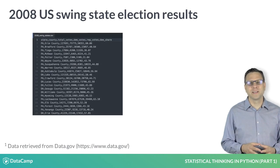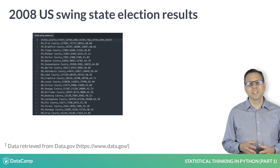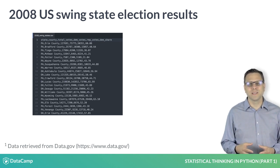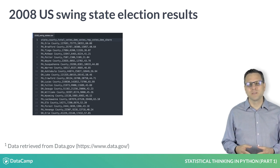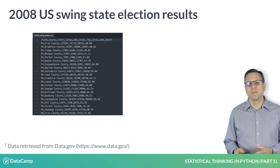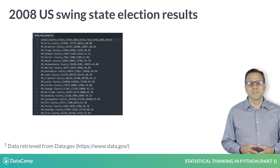Let's consider an example. Here I have a data set I acquired from data.gov containing the election results of 2008 at the county level in each of the three major swing states of Pennsylvania, Ohio, and Florida. These are the ones that largely decide recent elections in the U.S.